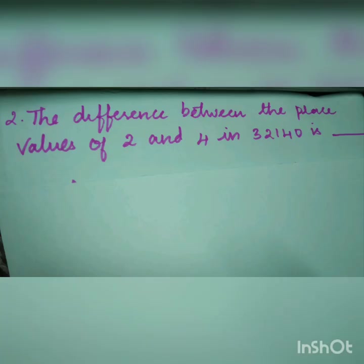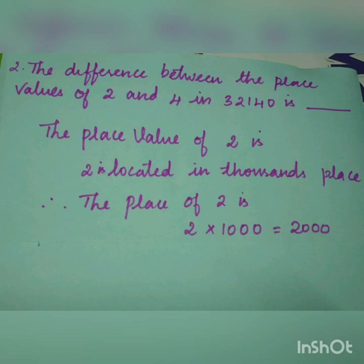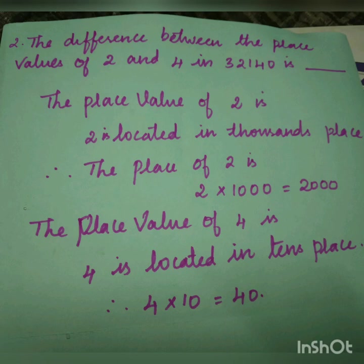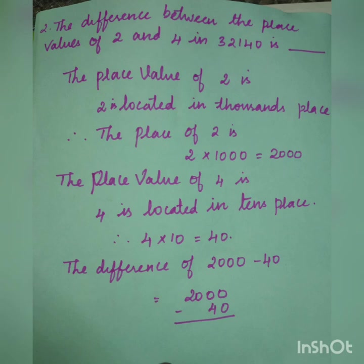The next question is: the difference between the place value of 2 and 4 in 32,140. In 32,140, 2 is located in 1000s place, so 2 times 1000 is 2000. Same way, 4 is located in 10s place, so 4 times 10 is 40. To find the difference, we subtract these two numbers: 2000 minus 40 gives 1960.